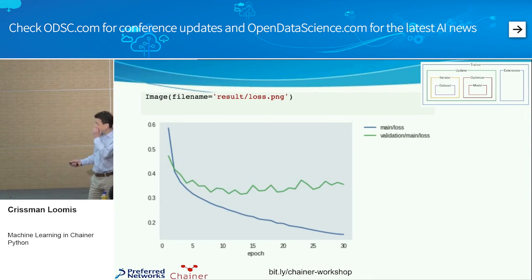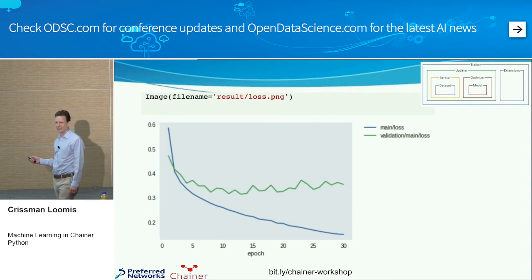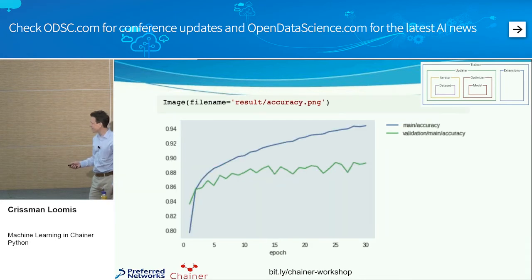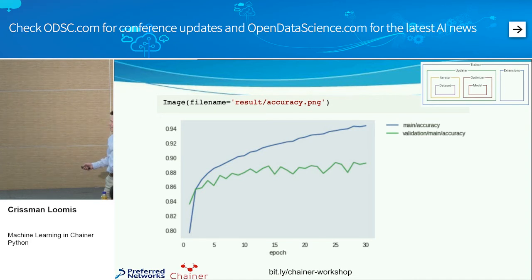This graph is telling us how we did. The loss tells you how far off the answers were. You can see the training data is getting better all the time, but the validation data got better and then trailed off — that's overfitting. Basically it's memorizing the data we gave it, but against examples it hasn't seen before it's starting to lose the plot. We can see that again when we look at the accuracy. For the training data we started at about 80% accuracy and continued up to about 95%. But for the validation set we started at about 84% and are now at about 88% and not gaining as quickly.